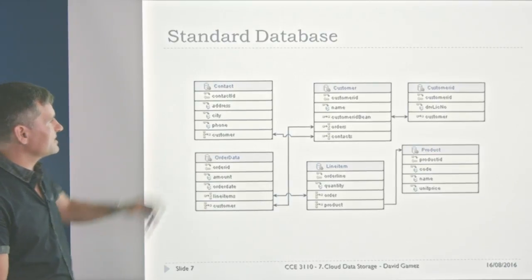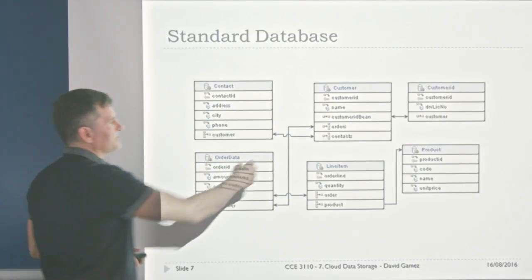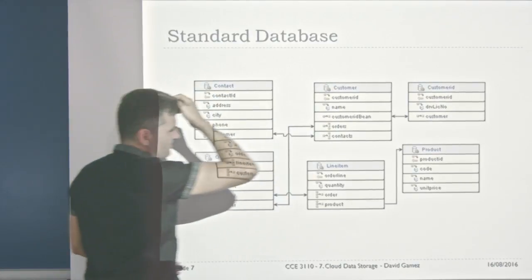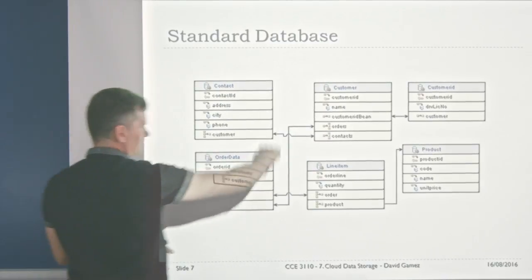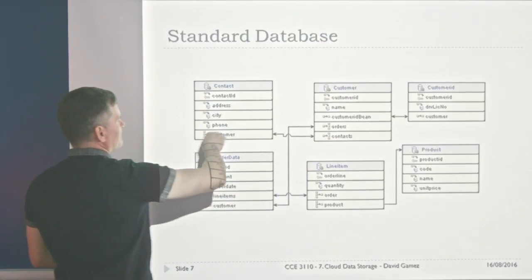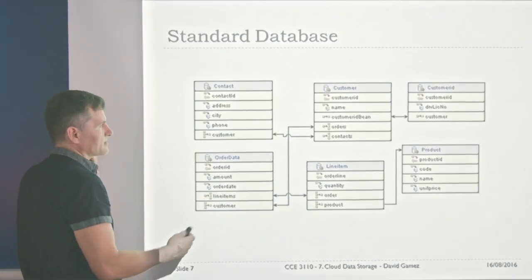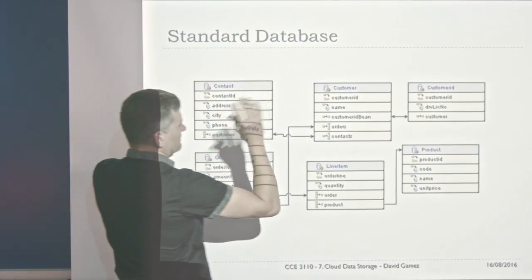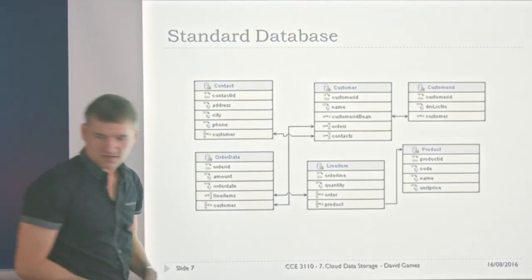A standard database looks like this — you have different tables, each with a particular ID such as contact ID or customer ID. Tables are linked together: a customer might have order IDs that link to another table, and there's a link between contacts and customers. These tables are quite tightly coupled. This is where consistency and isolation matter — if you change one table, you may also need to change another, so you probably want serial changes for tightly coupled tables, but parallel changes may be possible for independent parts.